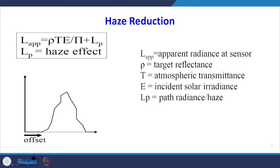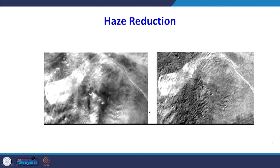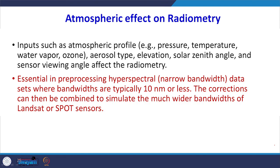Haze reduction has also been carried out. When the atmosphere is hazy, the brightness of the image is affected and features may not be clear. After applying the haze reduction algorithm, the haze effect is removed and one can see the landscape and terrain very clearly. Identification of objects becomes much more clear. Haze reduction methods are available in software.